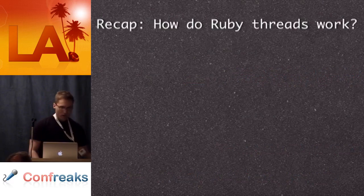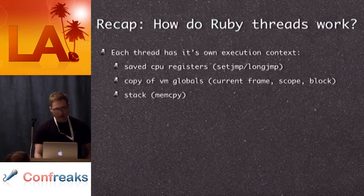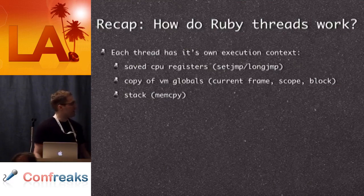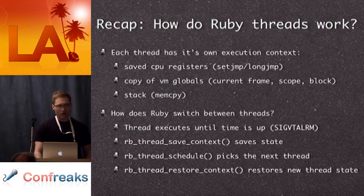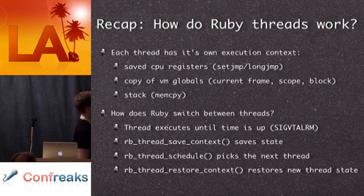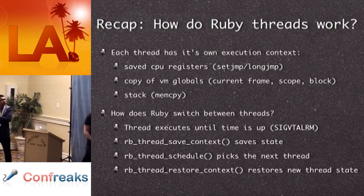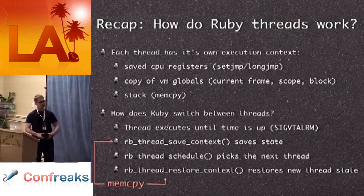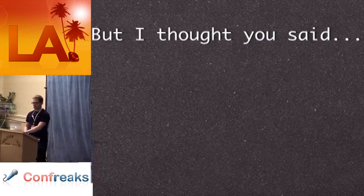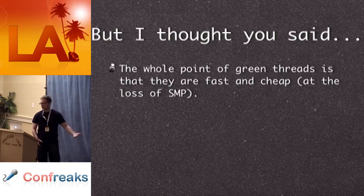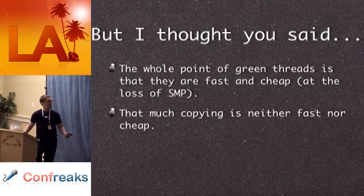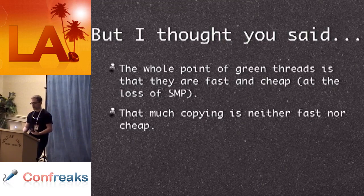Quick recap: how do threads in Ruby work? Each thread has its own execution context. You save the CPU registers and restore them with setjmp and longjmp. You have a copy of the VM globals and a copy of the stack made by calling memcpy. Ruby switches between threads by executing until you get a signal from the kernel, saves the context, calls the scheduler to pick the next thread, then restores that thread's context. Between these two phases, there are two calls to memcpy — one to save, one to restore. You said at the beginning that green threads are supposed to be fast and cheap, but that much copying is neither fast nor cheap.